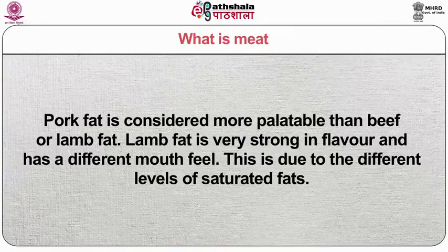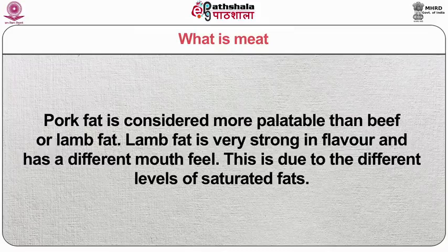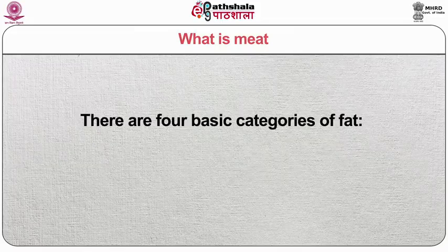Different types of species have different types of lipid combinations. The taste and melting points of different fats can reflect different uses in the kitchen. Pork fat is considered more palatable than beef or lamb fat. Lamb fat is very strong in flavor and has a different mouth feel, due to the different levels of saturated fats. There are four basic categories of fat: subcutaneous fat — the fat found directly under the hide or skin of the animal, which is very dense and good for barding and larding. Pork fat back is an example.